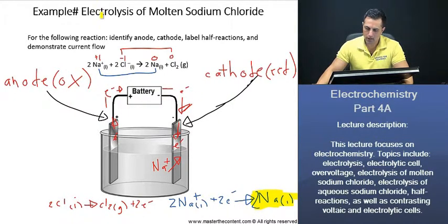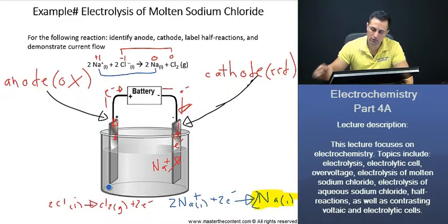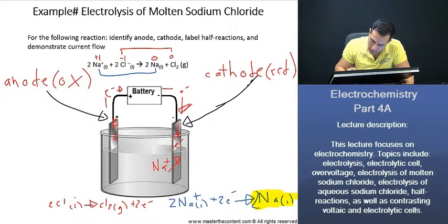Now, in the same regard, to restock the electrons that were taken by the battery here, this positive electrode, what it's going to do is, it's going to attract the chlorine ions.